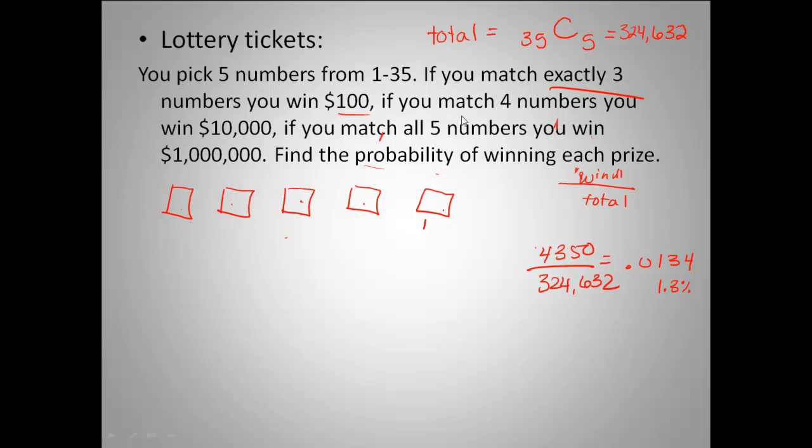Let's jump to the next one. Probability that you match exactly four numbers. Now I need to have four wins and one loss. I'm going to follow a similar process. There's five winning numbers and I need four of them. When I do that, I get five, so there's five different ways I could arrange that. And then my losers. There's still 30 losers to pick from, and I need to pick one of them. So when I do that combination, I get 30.